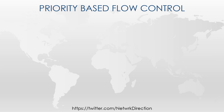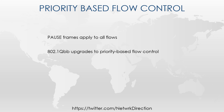There is a problem with standard pause frames: when a sender is asked to pause, they will pause all flows. This is not ideal as it may result in interruption of real-time traffic like voice and video. To address this, pause frames were upgraded in the 802.1Qbb standard to priority-based flow control, which enables pause frames to be sent on a per class of service queue. This means lower priority traffic can be paused while leaving high priority flows alone.